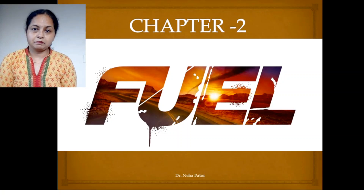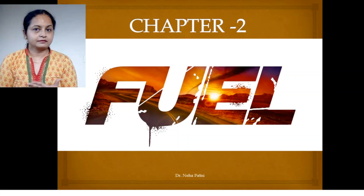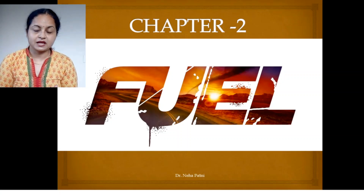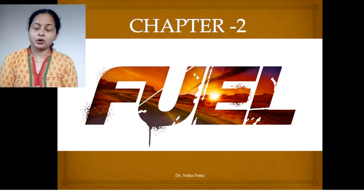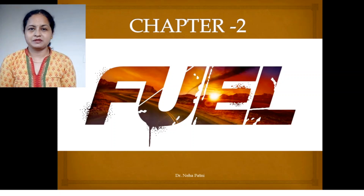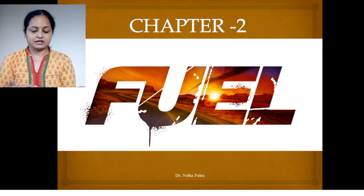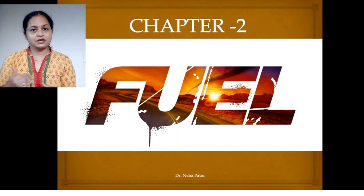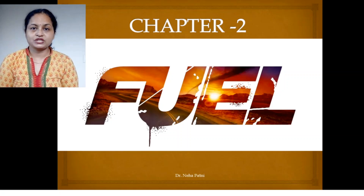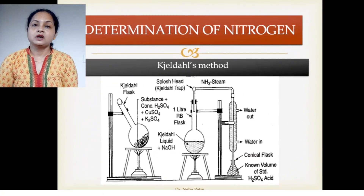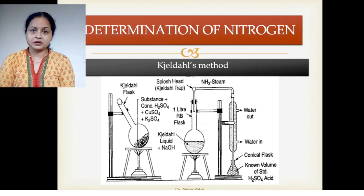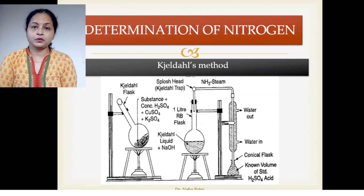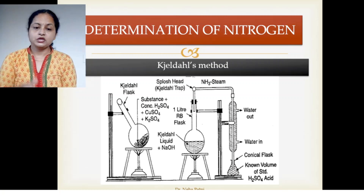Before selecting any compound or sample to be used as a fuel, certain analyses need to be done — they may be proximate analysis or ultimate analysis. Today I will focus more on estimation of nitrogen in ultimate analysis, where we need to find out how much of each element is present — carbon, hydrogen, nitrogen, oxygen, and sulphur. So today we are going to discuss how percentage nitrogen is estimated using the Kjeldahl method.